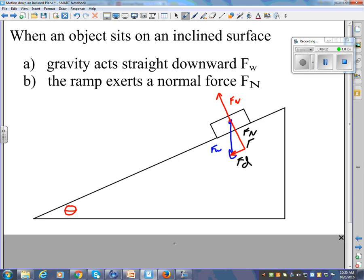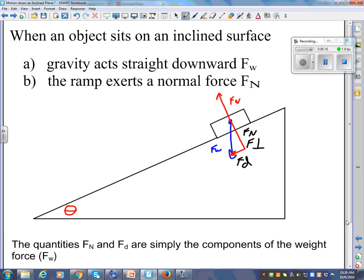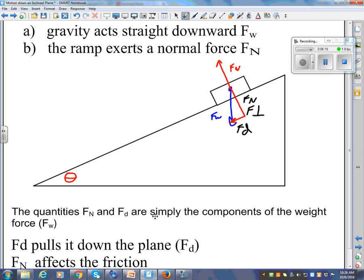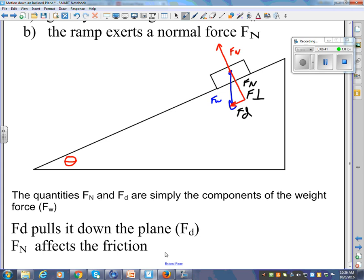So I'm going to call this one here that is parallel to the plane, I'm going to call this one Fd, down the plane, instead of X or Y. It's the component that is down the plane. And then this one here is Fn. It's the component of the weight force that is perpendicular to the surface. Some books will call it F perpendicular. The quantities Fn and Fd are simply the components of the weight force. Fd pulls it down the plane, and Fn affects the friction.